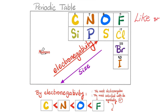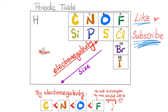You need to know the following periodic table elements by heart: hydrogen, carbon, nitrogen, oxygen, fluorine, silicon, phosphorus, sulfur, chlorine. Under chlorine there is bromine, and there is iodine. Electronegativity increases as you go up and to the right, making fluorine the most electronegative. Size increases as you go down and to the left — so chlorine is bigger than fluorine, bromine is bigger than chlorine, and iodine is bigger than bromine.